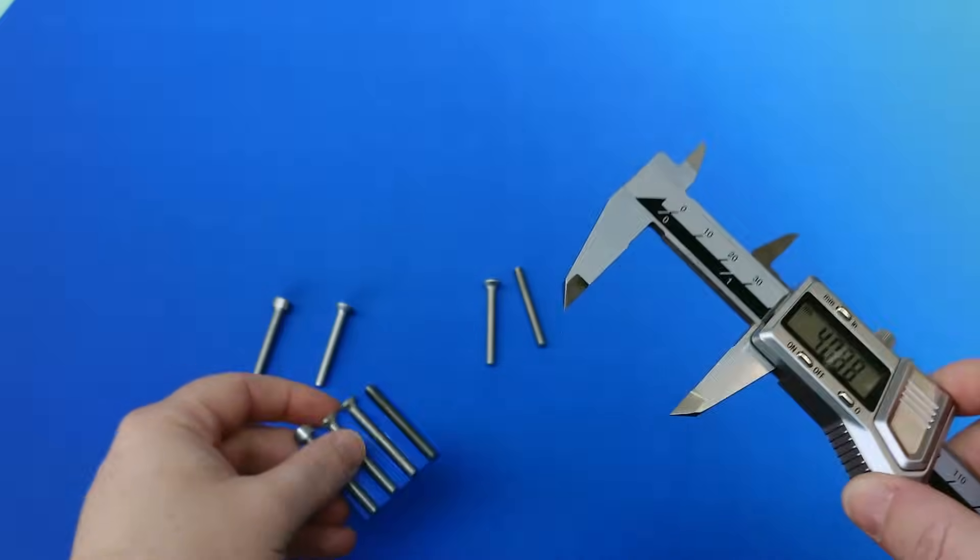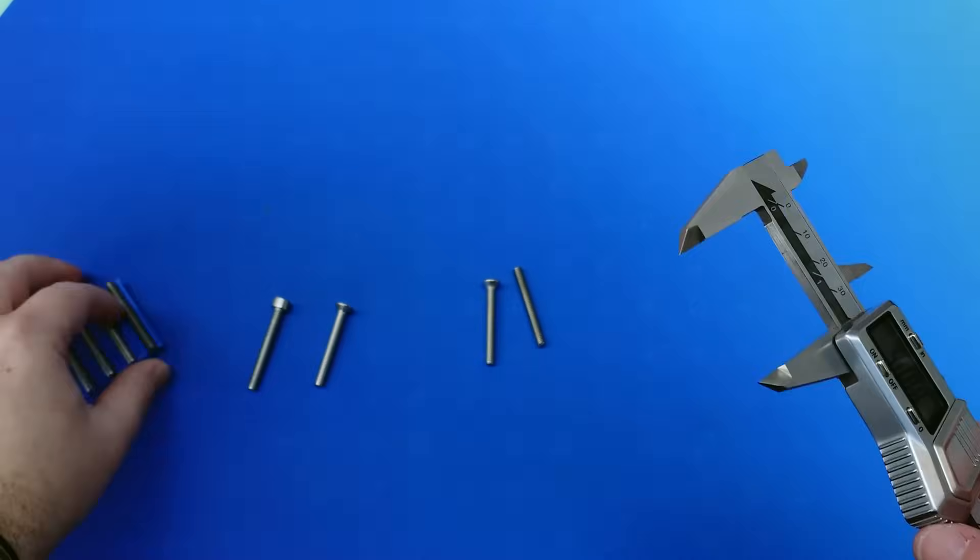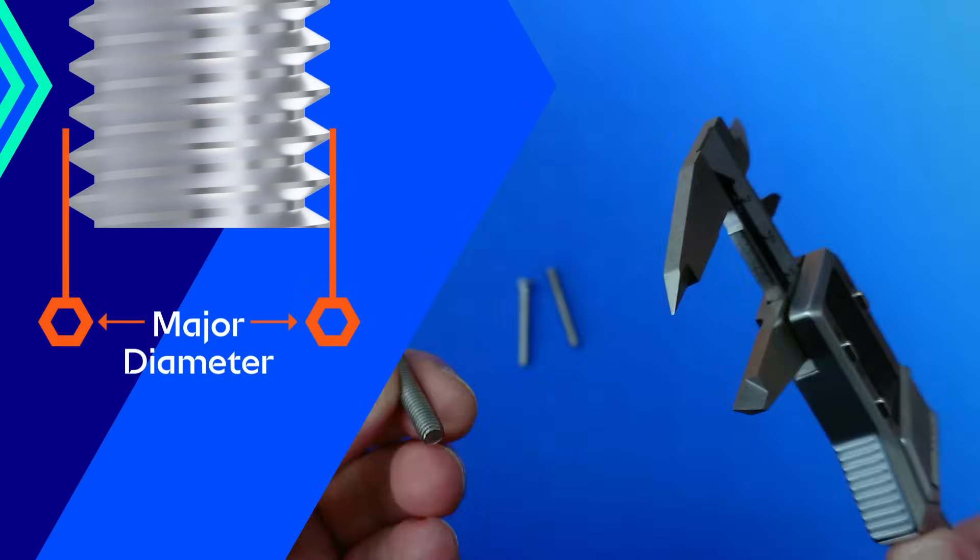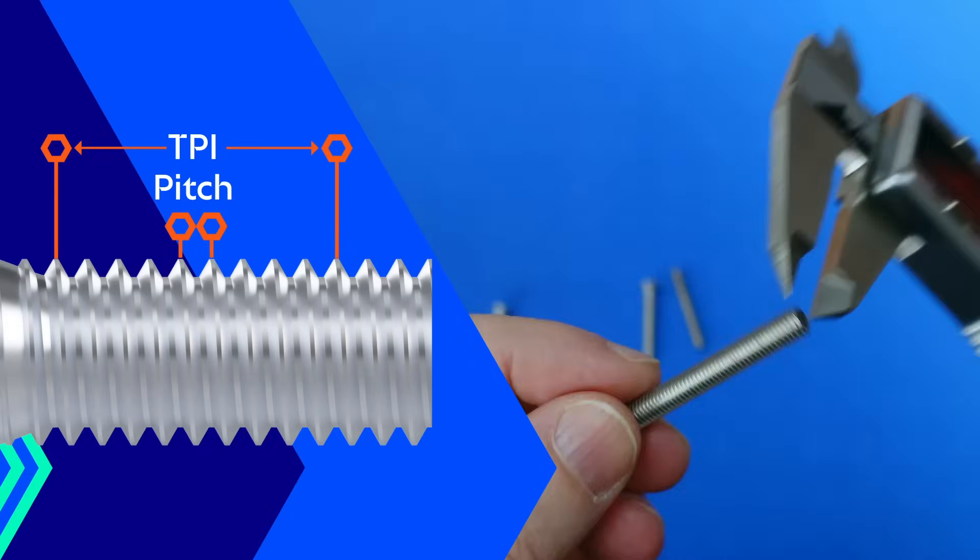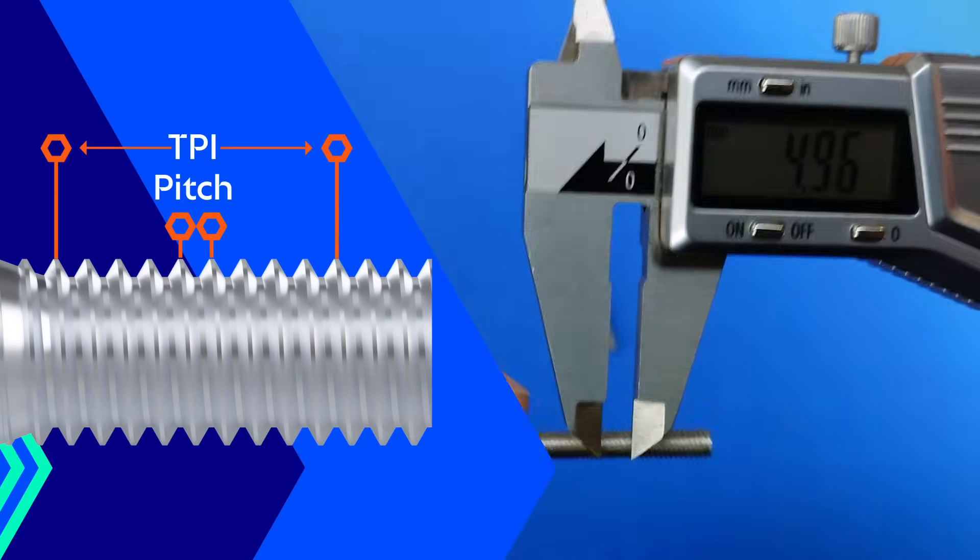Cool, so now we know how to measure length, let's move on to measuring the thread size of the screw. There's two key measurements to obtain here to fully understand thread size as a whole. These are the major diameter, and the spacing between the threads, which is the pitch for metric, or TPI, turns per inch for imperial.